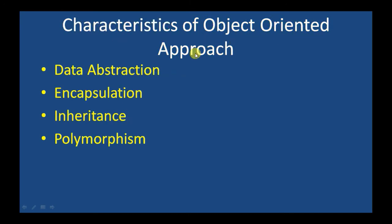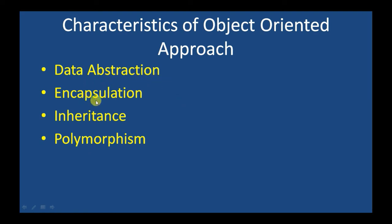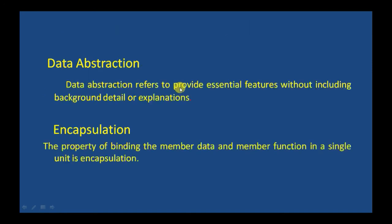Now we have the characteristics of the object-oriented approach. It is necessary to understand some of the concepts used in object-oriented programming. These include the following characteristics: data abstraction, encapsulation, inheritance, and polymorphism.